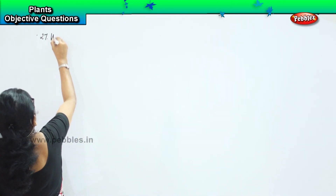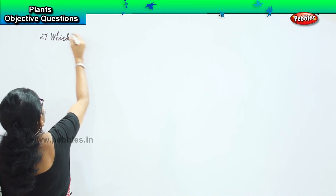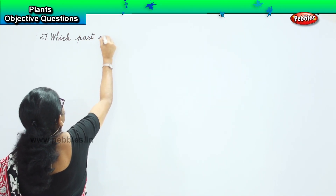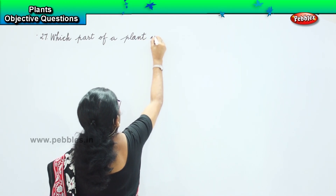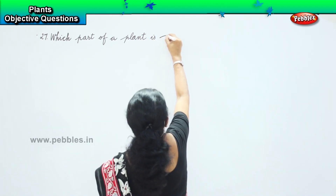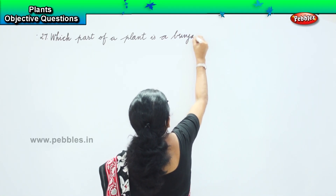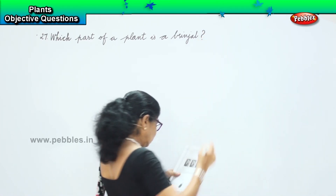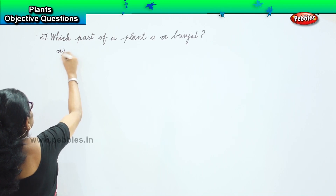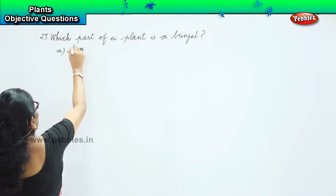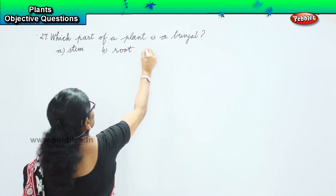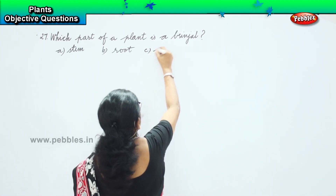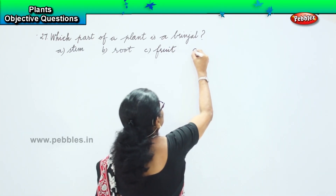Which part of a plant is a brinjal? The options are: A, brinjal is a stem; B, brinjal is a root; C, is brinjal a fruit; D, is brinjal a flower? Let us choose.